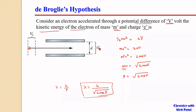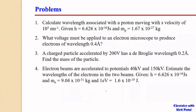Problem 1: Calculate the wavelength associated with a proton moving with a velocity of 10⁵ meters per second, given the value of h and the mass of the proton. Since mass and velocity of the proton are given along with h, this is straightforward: λ = h/(mv), where m is the mass of the proton, v = 10⁵ m/s, and h = 6.626 × 10⁻³⁴ J·s. Substituting these values gives the wavelength of the proton.